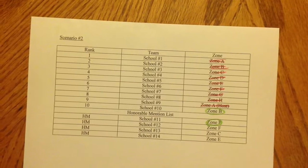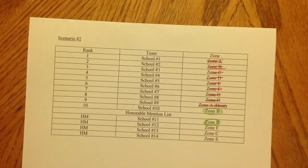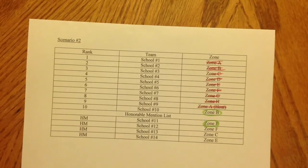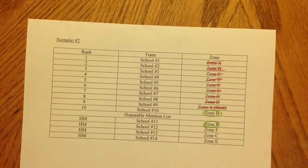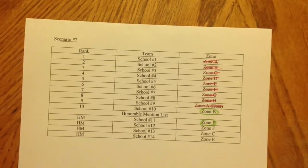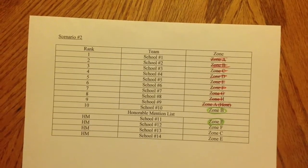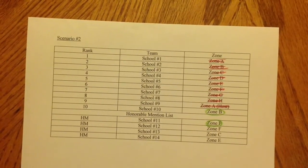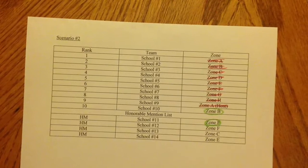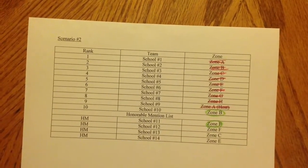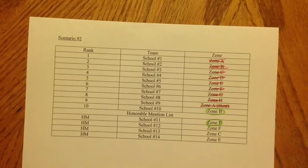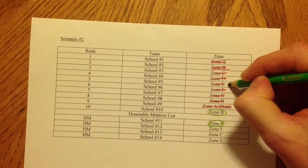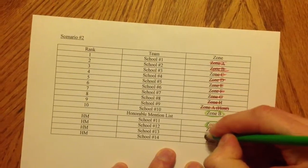Because the honorable mention list doesn't specify which teams are ranked higher, once a zone has received a wildcard berth via the honorable mention list, it is only fair that remaining wildcards are distributed to other zones that haven't received one yet. In this case, there's a tie between Zone C and Zone E — each has one team in the honorable mention list. The tiebreaker, according to my proposal, is that the zone with the highest top-10 ranked team gets the wildcard, because we want to award wildcards to the most competitive zones. Zone C has a team ranked at number three and Zone E has a team ranked at number five, so Zone C would get that third and final wildcard berth.